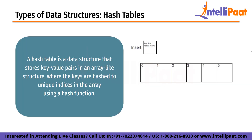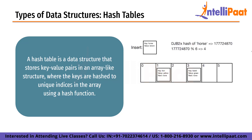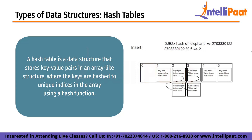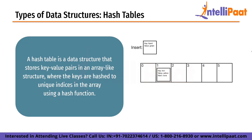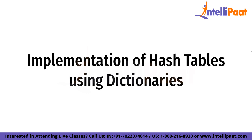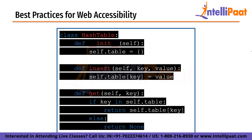A hash table is a data structure that stores key-value pairs in an array-like structure, where the keys are hashed to unique indices using a hash function. Hash tables are used to implement associative arrays or mappings, where lookup, insertion, and deletion operations can be performed in O(1) time complexity on average. In Python, hash tables are implemented using dictionaries, which use a hash function and handle collisions using open addressing with linear probing. The hash table class is defined with insert and get methods. The insert method takes a key-value pair and stores it using the key as the index, and the get method returns the value associated with a given key.